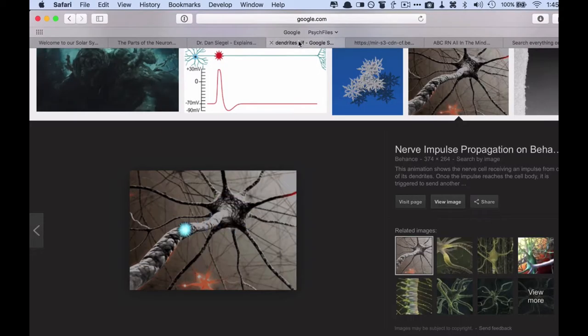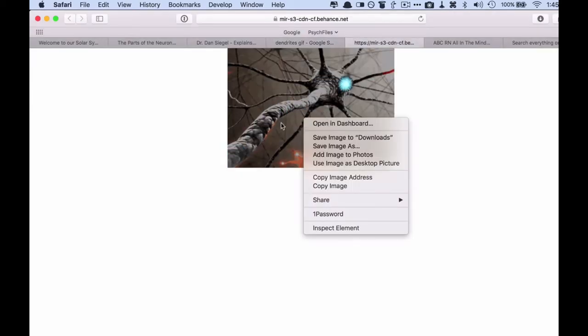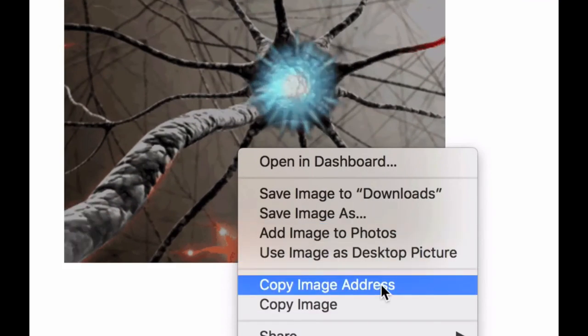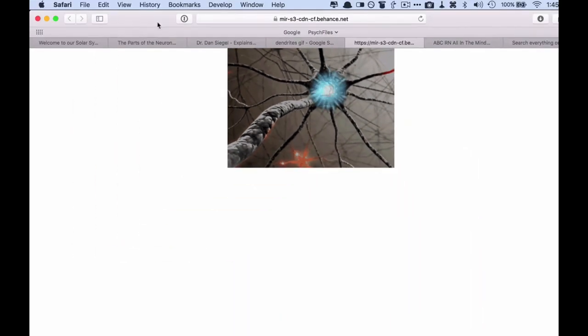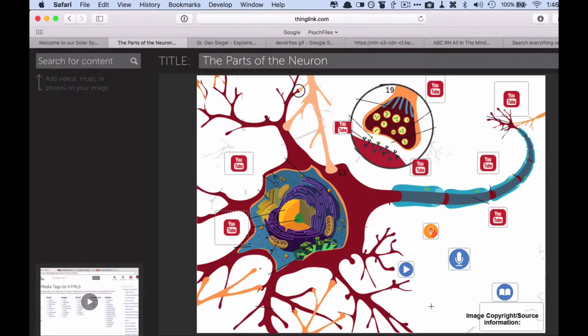Another quick example, I found this animation here of a neuron. And so all I have to do really is just right-click, copy image address, come back, tap somewhere where you'd like that image to play.